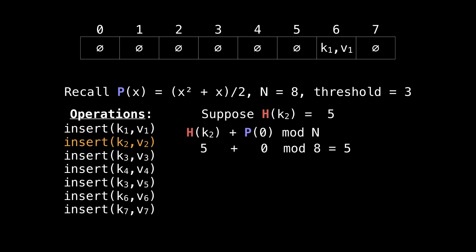Alright, next, k2. Suppose k2 equals 5, then we're going to insert it at 5, no collision there. Suppose k3 then equals 5, then we have a collision, so we need to handle that.